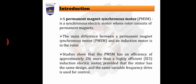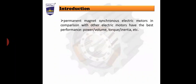The main difference between the permanent magnet synchronous machine and the induction motor is in the rotor construction — it is just like an induction motor. Studies show that the permanent magnet has an efficiency of approximately 2% more than a highly efficient induction electric motor. Permanent magnet synchronous machines, in comparison with other electrical motors, have the best performance in terms of power, volume, torque, and energy.